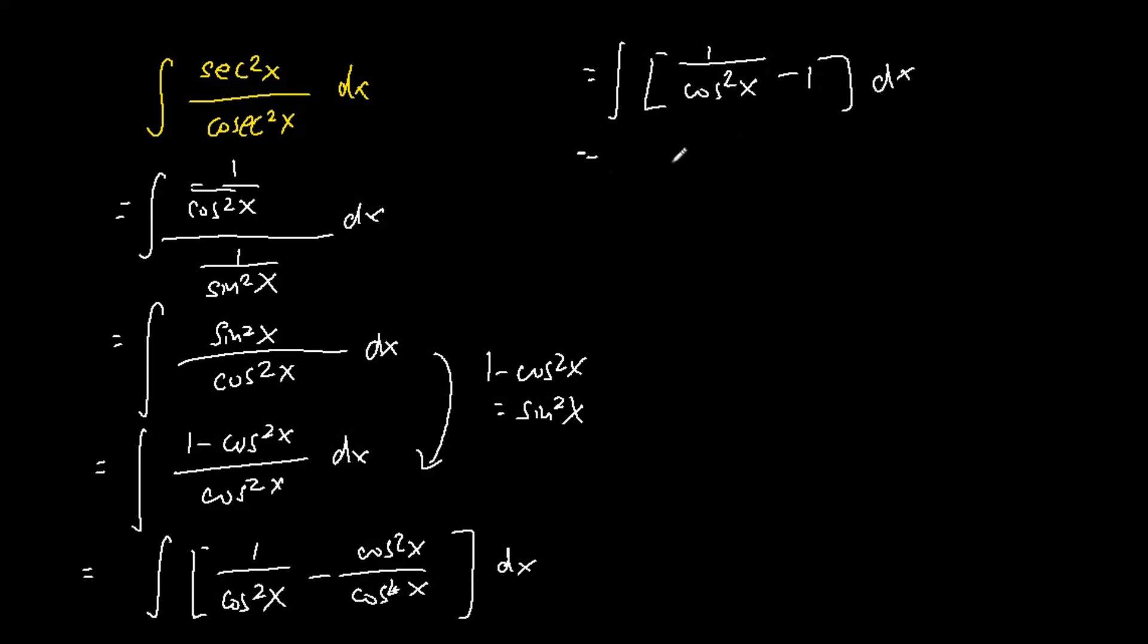Then we split this out into two different integrals. The first integral is the integration of 1 over cosine square x, and the second integration will be the integral of 1 dx.